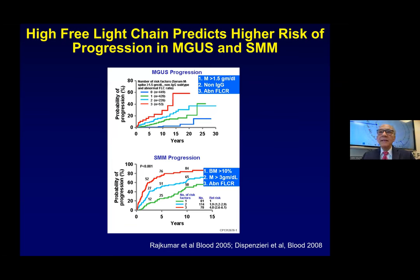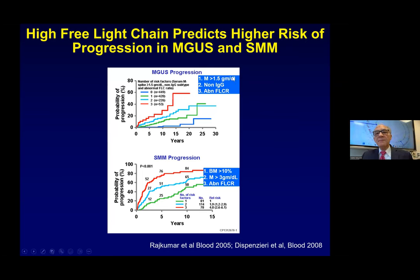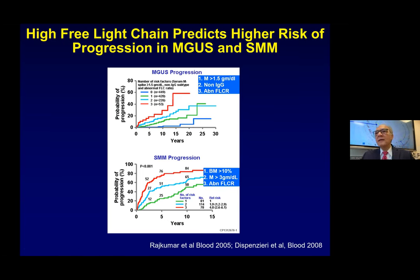From a prognosis point of view, the free light chain is important because in patients with early disease — monoclonal gammopathy — we can measure the free light chain and determine whether this MGUS is going to progress to myeloma soon or take a very long time. There are three features we identify: M-spike, non-IgG myeloma, and free light chain. If all three are present, then in 20 years there is a 60% chance the patient may get myeloma, so we follow this patient more frequently every six months. But if all are negative, the chance is only 5%, and the primary care physician may follow them.